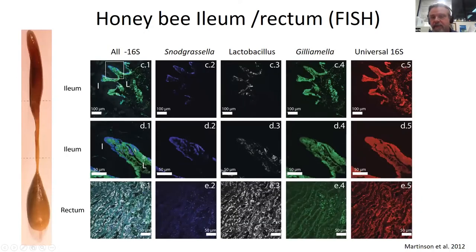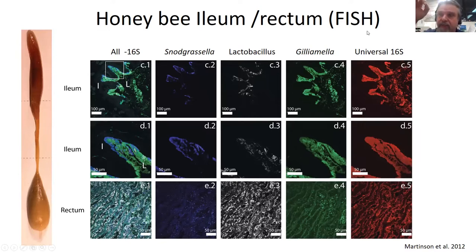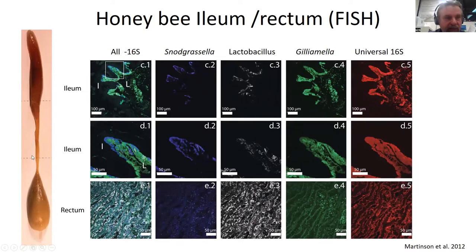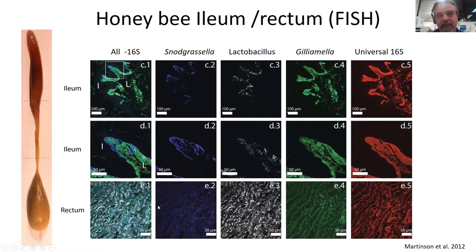Early on, Martinson at the University of Arizona, working with Nancy Moran, did some fluorescence in-situ hybridization — a technique where you put a molecule in that can light up a different color and attach to specific bacterial taxonomy. These are three of the main bacteria in the ileum. The ileum folds up with little constrictions. This shows you where the Snodgrassella, Lactobacillus, and Gilliamella are in this gut. In the rectum, we have a big biofilm. You can't see the full extent of the populations in the rectum.